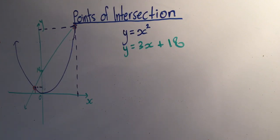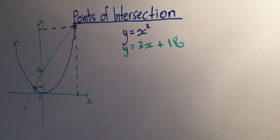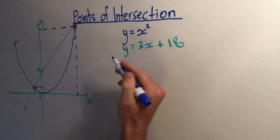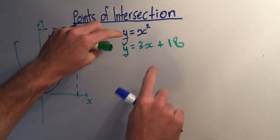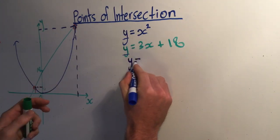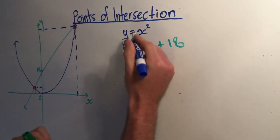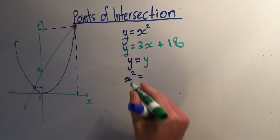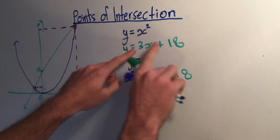How do we find those two points? Think about what we're saying here. We're saying that at these points — or for any two equations — if there is a point of intersection, the y and the x coordinate are the same. In other words, at those two points, this y and this y are the same. So let's make the y's equal: x squared equals 3x plus 18. That y equals that y.